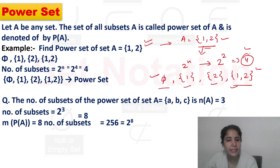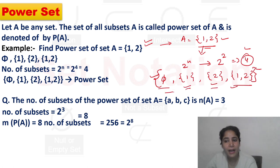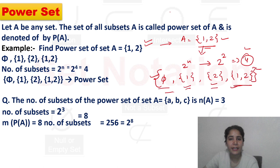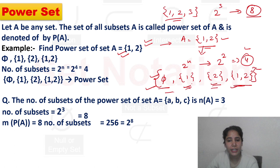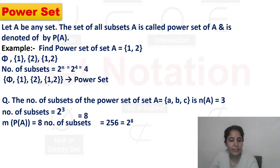Number of subsets के according आपको subsets बनाने पड़ते हैं। अब इसको आप एक set का नाम देते हो जिसमें यह चारों के चारों subsets part होते हैं। Let A be any set — whether it has two, three, or four elements. अगर {1, 2, 3} है तो subsets कितने हो जाएंगे — eight हो जाएंगे। तो power set जो बनेगा वो eight elements का बनेगा। Subsets का पूरा का पूरा जो set है उसको हम power set नाम देते हैं।